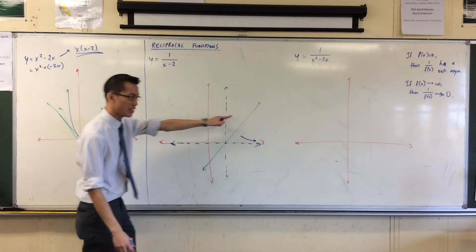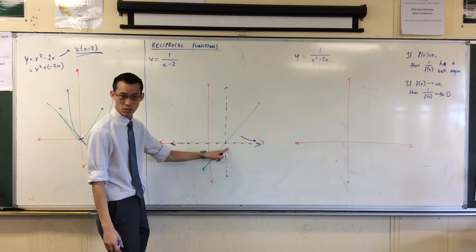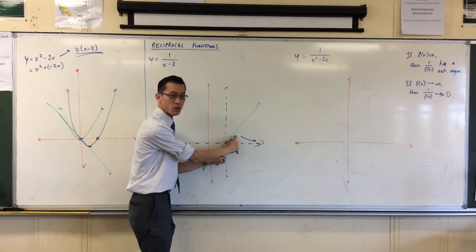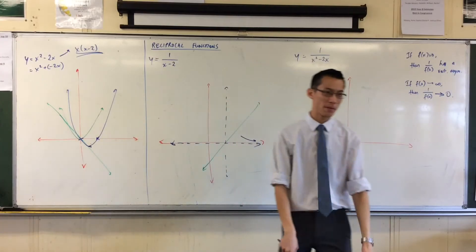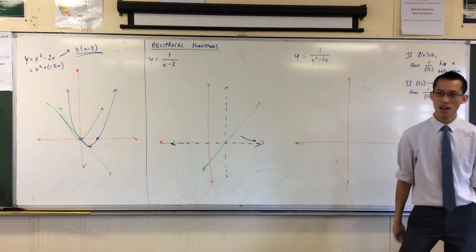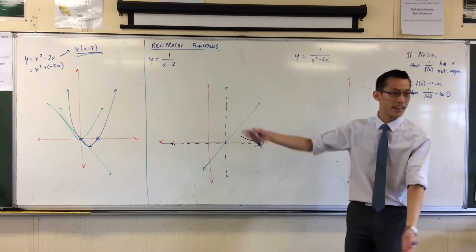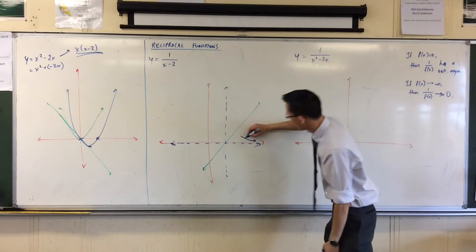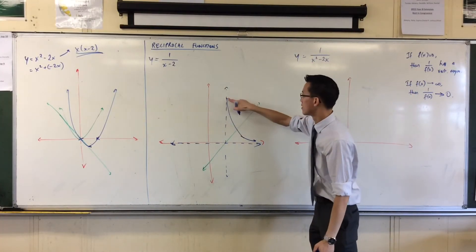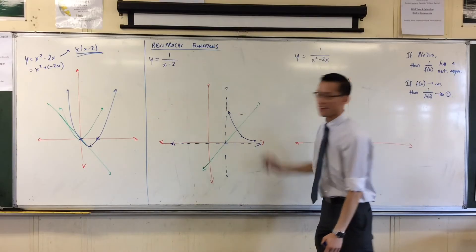But then as I go towards the left, towards x equals 2, the denominator is shrinking. It's vanishing away. So it's going to become 1 over 0.1, 1 over 0.001. It's going to skyrocket. That's what it's doing.